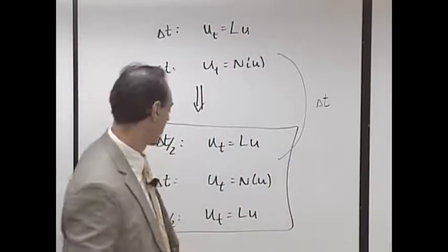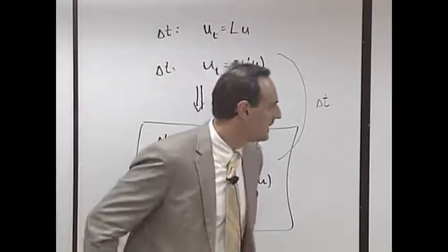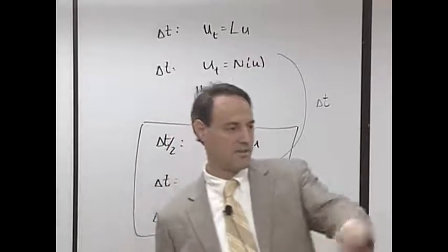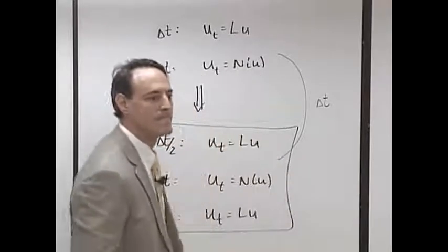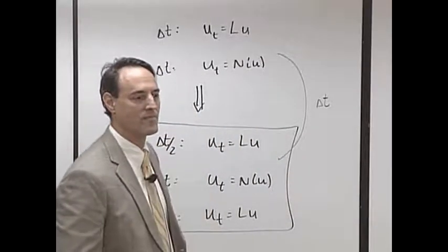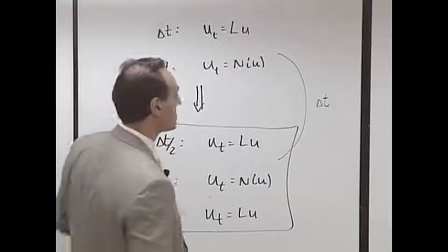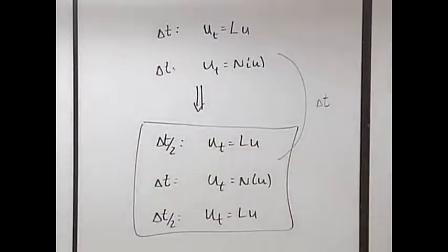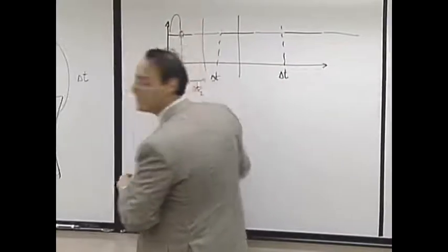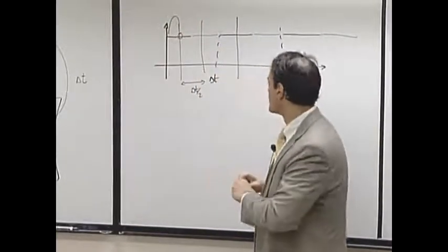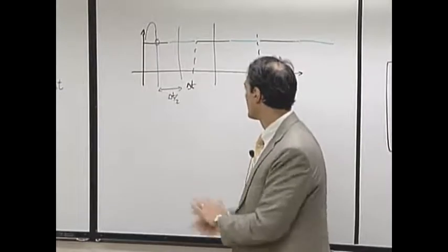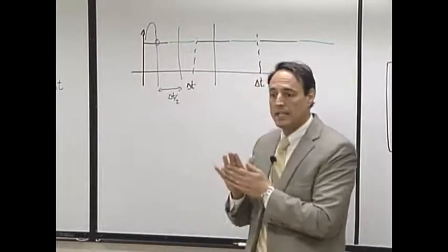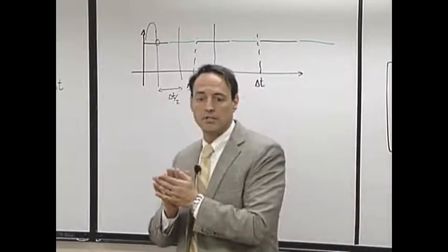Consider yourself to be starting from t equals zero. That first delta t over two step here? Yes, so yeah, you basically shift your initial condition now here. Yeah.